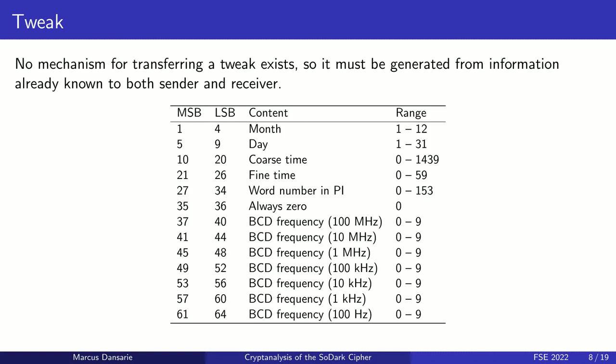There is no mechanism in the ALE standard for transferring the tweak along with the ciphertext. For that reason, the tweak is generated using information already known to the sender and receiver, including the date and time of day as well as the frequency of transmission. Since precise time synchronization in an HF network can be hard to achieve, a system setting called the Protection Interval (PI) governs the granularity of the time fields, with the highest granularity corresponding to second-level accuracy. To ensure a different tweak is used for all encryptions, the word number field is incremented for each 24-bit word in a frame. This means any two tweaks used for encrypting words in a frame will differ only in the fifth tweak byte.